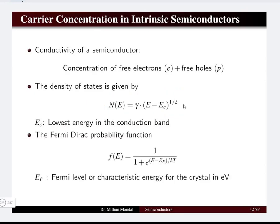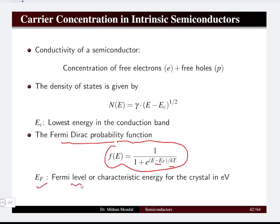The Fermi-Dirac probability function is given by f(E) = 1 / (1 + e^((E − Ef)/kT)), where Ef is the Fermi level or the characteristic energy for the crystal, whose unit is in electron volts. We will use the density of states equation and the Fermi-Dirac probability function together to find the concentration of charge carriers.